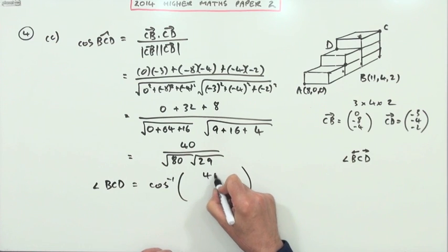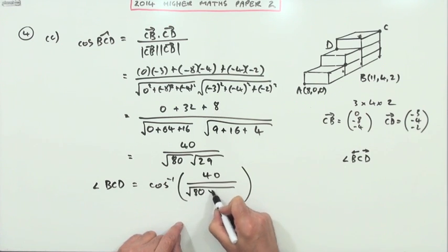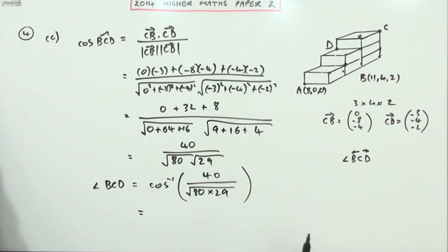So finally, I can just see the angle BCD will be the inverse cosine of that. There's no need to work that out. The only concession I might make is if I've got a product of roots, that'll just be the square root of the product. That'll save me typing one less thing into my calculator. But that's all I do now, I just type that into the calculator.